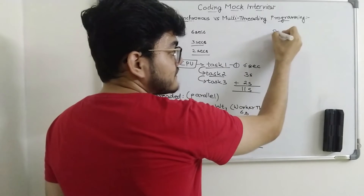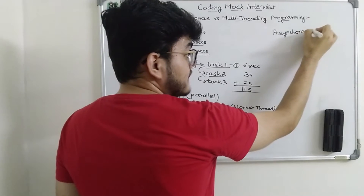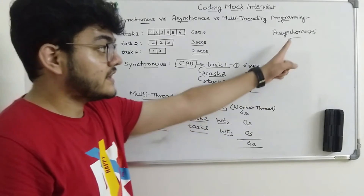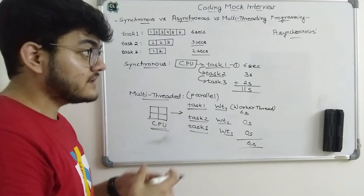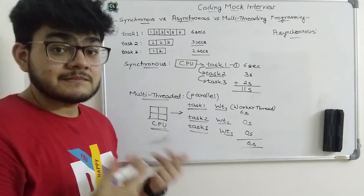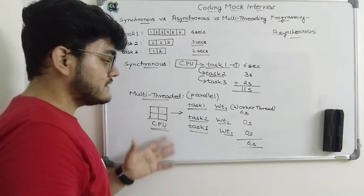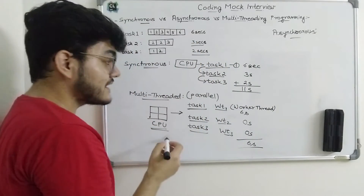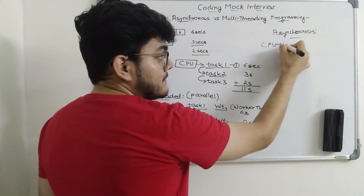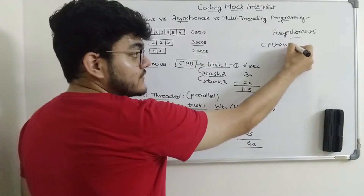The next concept is asynchronous programming, and this is a question I have personally faced in interviews: what is the difference between multi-threaded and asynchronous programming? They are close to each other and many programmers believe they are the same — this is a misconception. These two are different strategies. In asynchronous, the CPU does not assign three different worker threads but only one single worker thread.